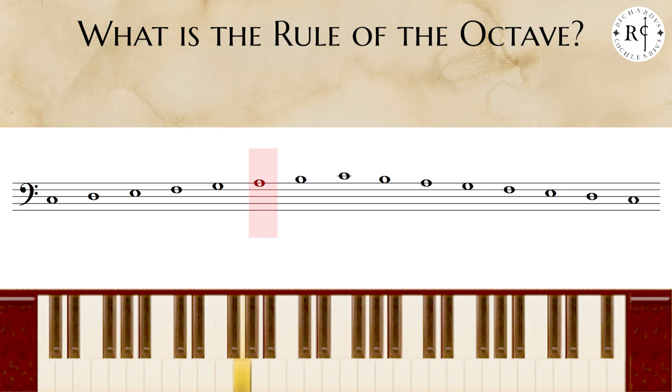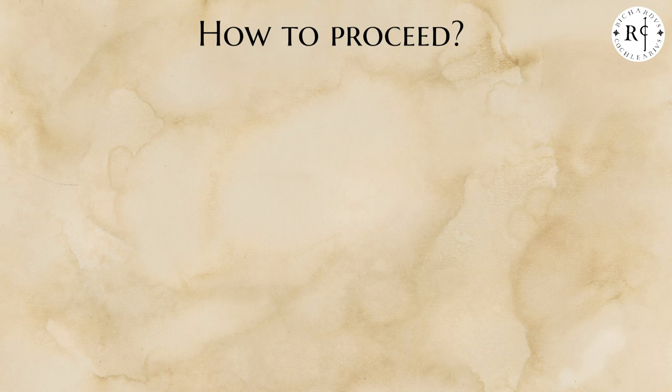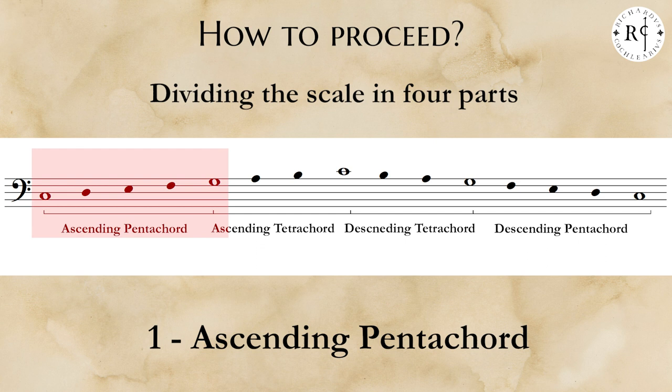How to proceed? The first step consists in dividing the ascending and descending scale into four parts: ascending pentachord, ascending tetrachord, descending tetrachord, and descending pentachord.